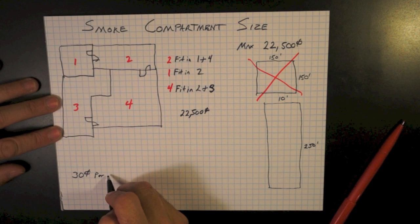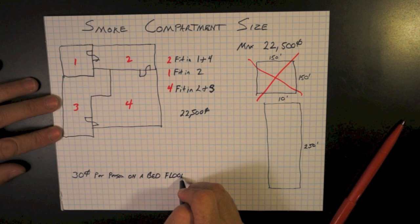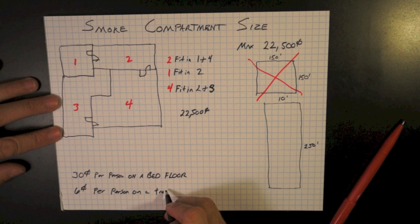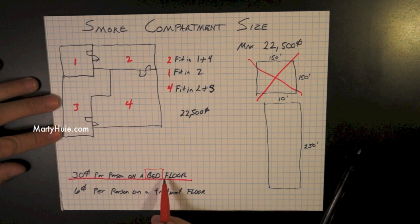Now the occupant load number that we have to use for transferring patients from one smoke compartment to another is 30 square feet per person on a bed floor. And if it has one bed on that floor, that's the number we're supposed to use. Also, 6 square feet per person on a treatment floor that has no beds on it.